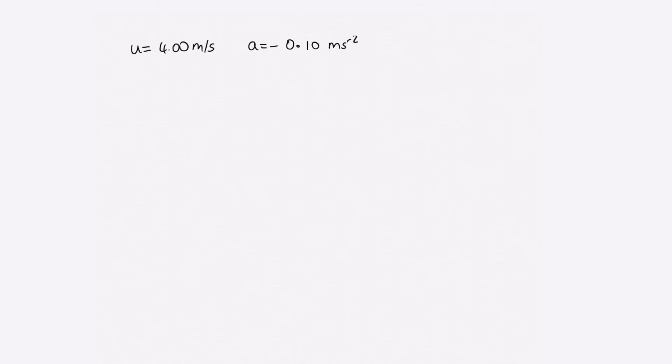The negative sign comes about because it's a deceleration. In the first part of the equation, we're asked to calculate Anna's speed after 30 seconds.